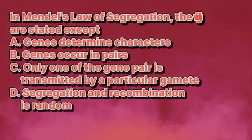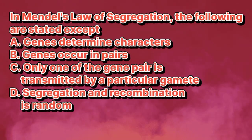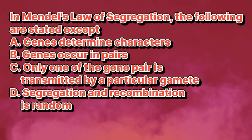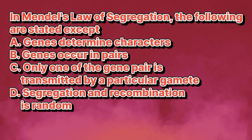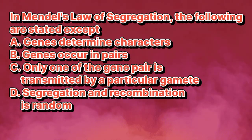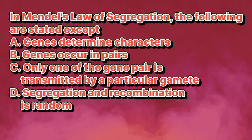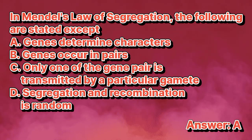In Mendel's Law of Segregation, the following are stated except: A. Genes determine characters. B. Genes occur in pairs. C. Only one of the gene pair is transmitted by a particular gamete. D. Segregation and recombination is random. The answer is letter A.